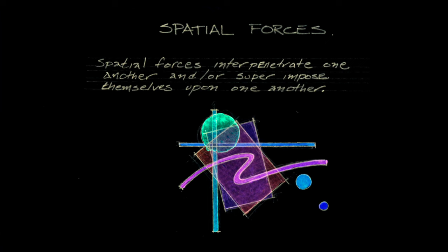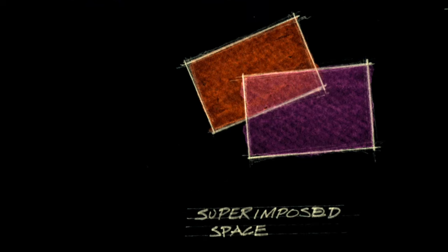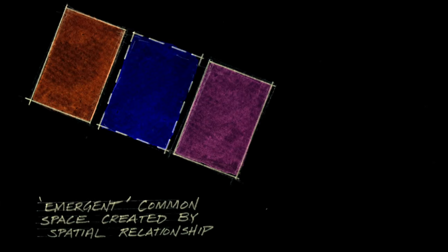Often there is a dialectic in perception, keeping two different things in mind at the same time. Spatial forces interpenetrate one another and superimpose themselves on one another. Spatial forces can cause interference and interpenetration. Emergent space is created by two adjacent spaces, created by a spatial relationship between two or more other spaces.